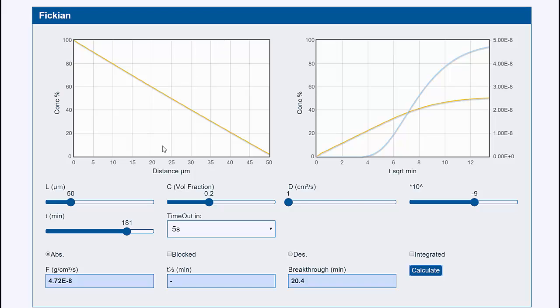We say we've got a measurement over 180 minutes, 3 hours, where we've dunked our sample, which is 50 microns, into the solvent, and we know that the volume fraction in saturation is 0.2. You can find this out by dunking it in, leaving it for a day or so, and measuring it.